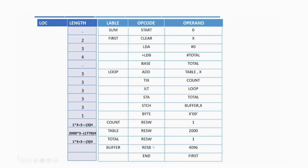Next, 'TOTAL RESW 1' — 1 multiplied by 3 is 3, and 3 converted to hexadecimal is still 3. Then 'BUFFER RESB 4096' — we are reserving 4096 bytes, so no multiplication needed. Directly convert 4096 to hexadecimal, which gives 1000. So the length is 1000 in hexadecimal. We have now calculated the length of all instructions, and there is no length reserved for END.